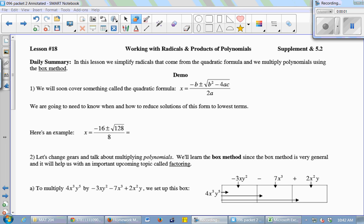So we are going to simplify radicals that come from the quadratic formula, which we have not actually covered yet, right? And we're going to multiply polynomials using the box method. Very soon we're going to be covering something called the quadratic formula. You may or may not have seen it in some previous math class. And it looks like this. It's just a formula with a bunch of letters in it. Sometimes you use that to replace all those letters with numbers and simplify. So today we're going to be practicing the simplifying part.